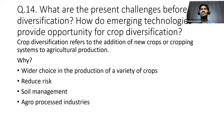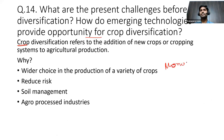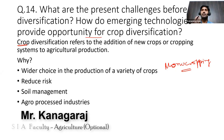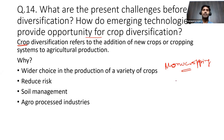Question number 14: What are the present challenges before crop diversification, and how do emerging technologies provide opportunities for crop diversification? This is a very general question, again directed against monocropping, which is highly prevalent in India — mainly rice and wheat monocropping.